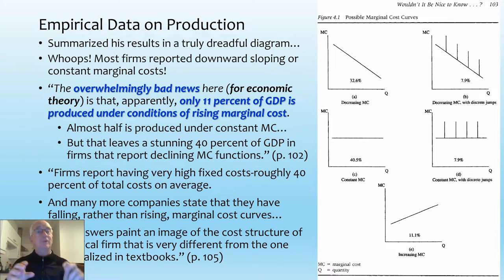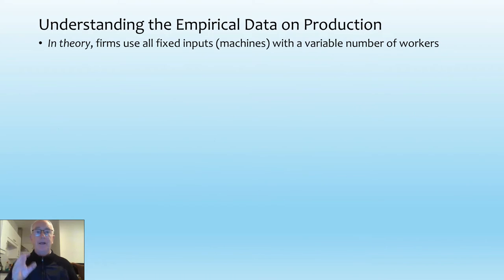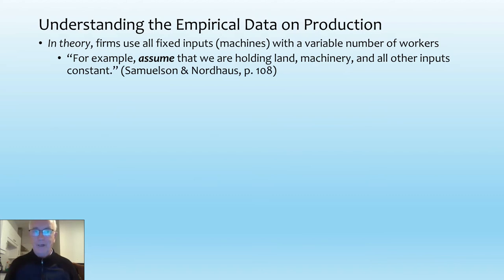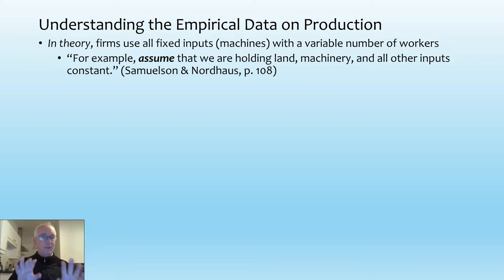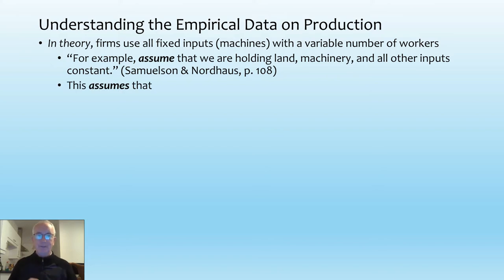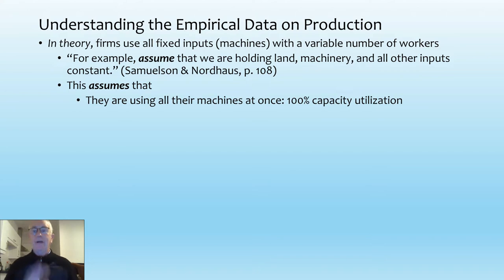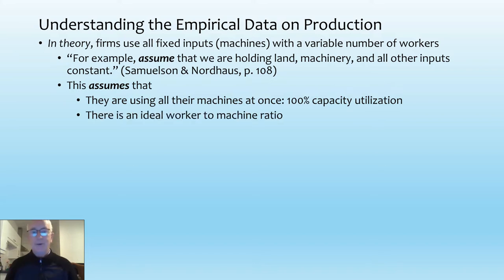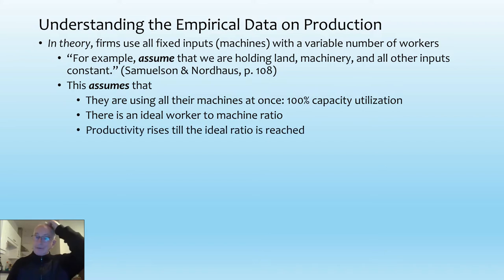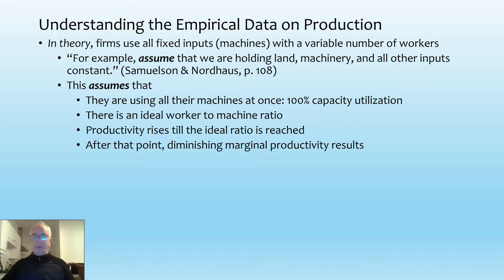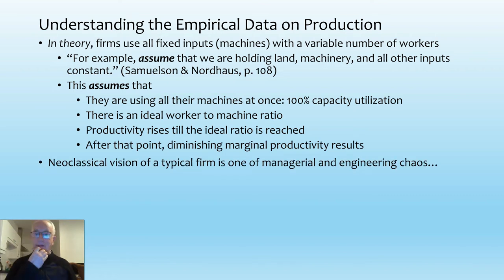This should have changed economic theory completely. In theory, why do you get rising marginal cost? It's because you have fixed inputs — machines — and a variable number of workers. Samuelson and Nordhaus assume that you're holding land, machinery, and all other inputs constant. What they also assume is that you use every last unit rather than using units in a perfect ratio, so you're assuming all your machines are turned on — 100% — but many are being used below the ideal ratio of workers to machines. There is an ideal worker-to-machine ratio, and productivity will rise until you reach that ratio, but beyond that point you'll have diminishing marginal productivity.